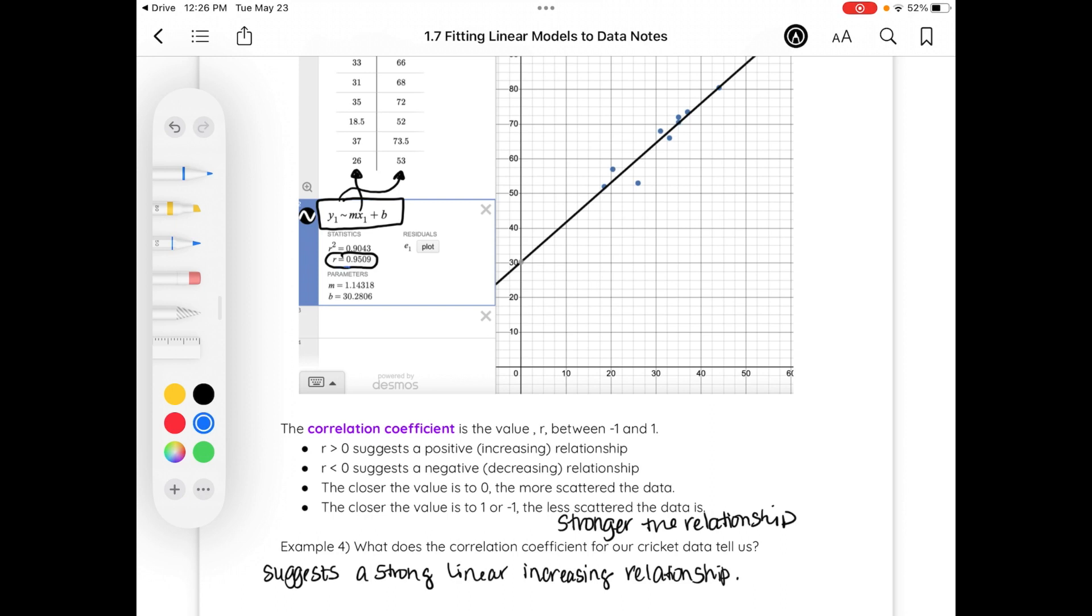Notice what other information it gives us. It gives us the equation that we should be using. It gives us our slope and the y-intercept. So while we were very close with what our slope and y-intercept should be, this gives us an even closer value. So we would want to use the equation y equals 1.143 times x plus 30.281 when I round to three decimal places.